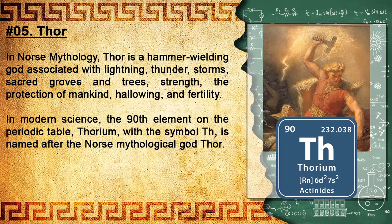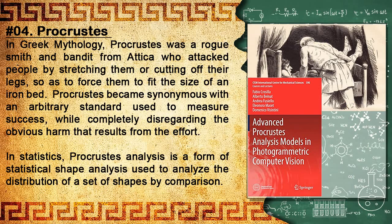Number 5: Thor. In Norse mythology, Thor is a hammer-wielding god associated with lightning, thunder, storms, sacred groves and trees, strength, the protection of mankind, hallowing, and fertility. In modern science, the 90th element on the periodic table, thorium, with the symbol Th, is named after the Norse mythological god Thor.